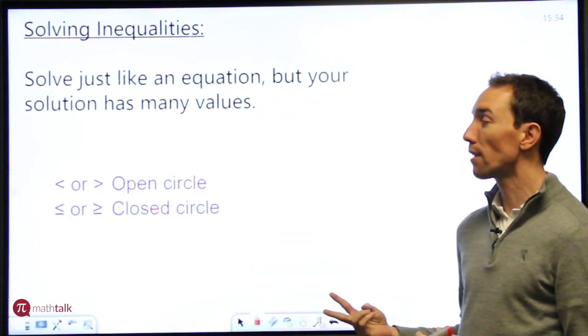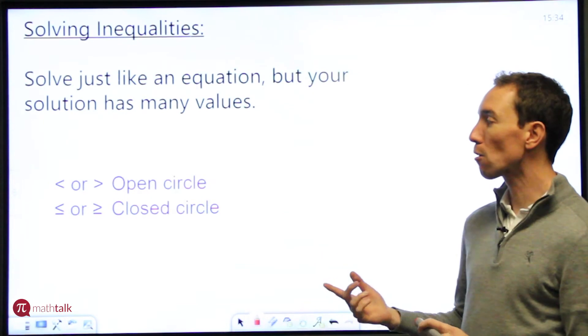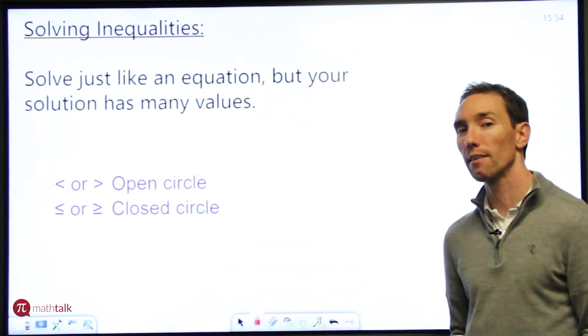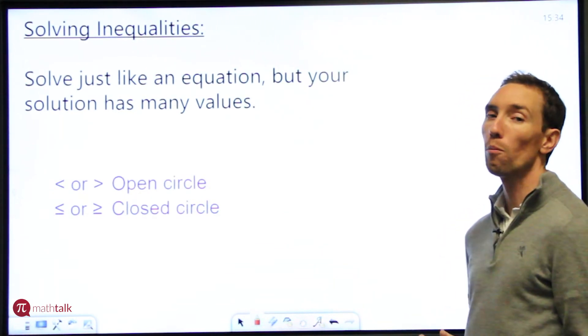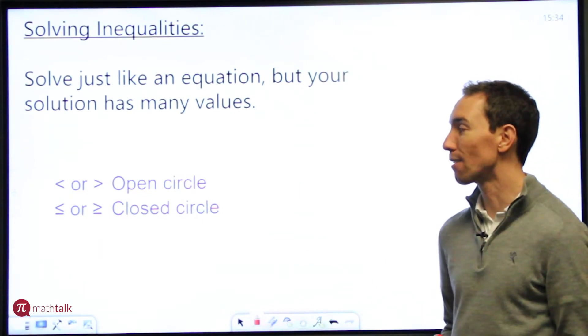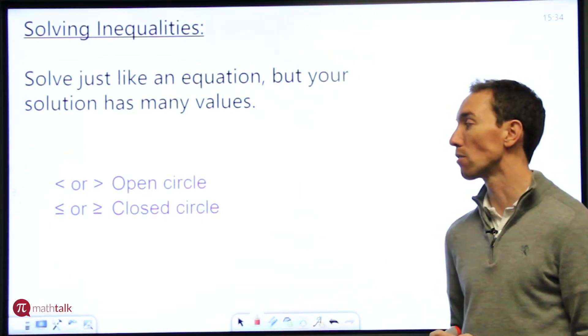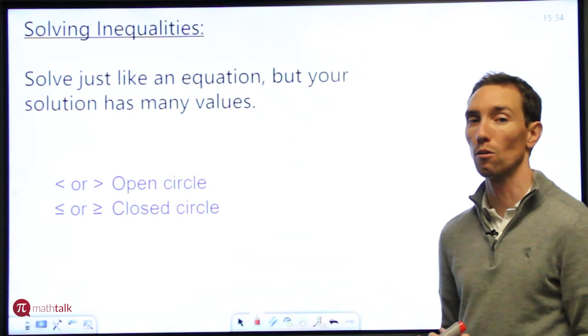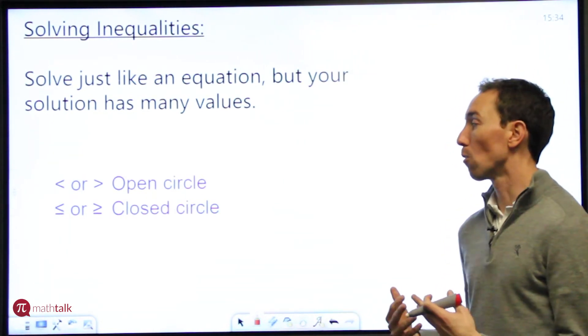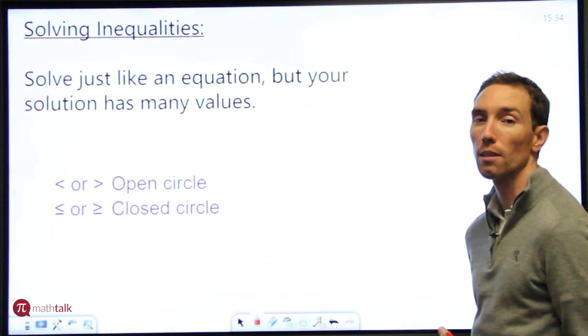So when you do that, there's two things to keep in mind. If your inequality has a less than or a greater than symbol on it, you're going to use an open circle as part of your solution. If it has a less than or equal to or greater than or equal to symbol, you're going to use a closed circle when you graph it. Let me go through a couple examples to show you what that means.